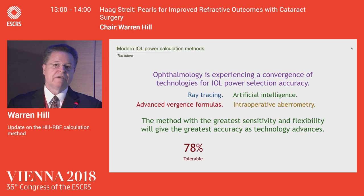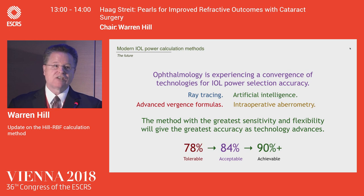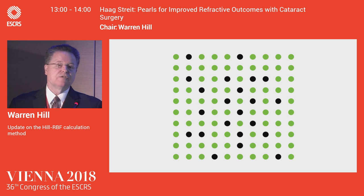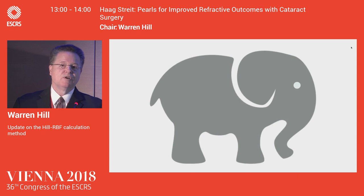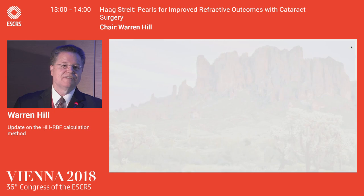Right now, 78% accuracy is what most people get. 84% is acceptable — an upper tier with current technology. But 90% or greater is actually achievable with what we have right now. This is where we are right now at 78%, and this is where we can be right now with the RBF method and the LENSTAR. The goal of this group is nothing more, nothing less, than the complete elimination of the refractive surprise — given enough time, enough cases, and enough dedication to this project.